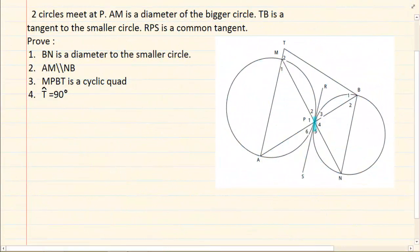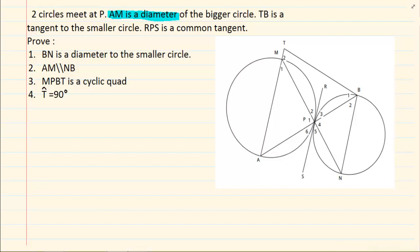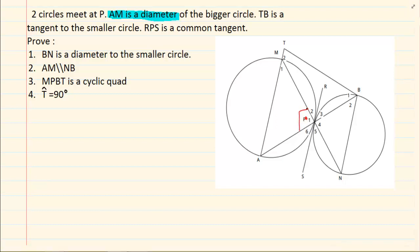Two circles meet at P, and they are telling us AM is a diameter. As soon as they give us information that is relevant you need to write it down. We have that AM is a diameter, and if AM is a diameter then that tells me that P1 is equal to 90 degrees. Why? It is angle in a semicircle.